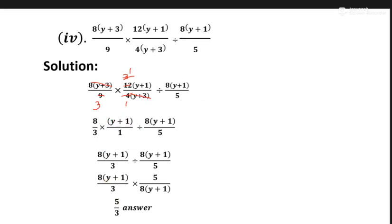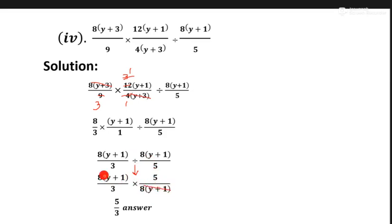Next cancel each other. We write it upon 3 — y plus 1 same as it is, 3 multiply by 1, and 8 multiply by this part. We write in this form. Again when we change division into multiplication, we take the reciprocal of one fraction part — 5 upon y plus 1. Common terms y plus 1 and y plus 1 cancel, and eight and eight cancel, so the answer is 5 upon 3.